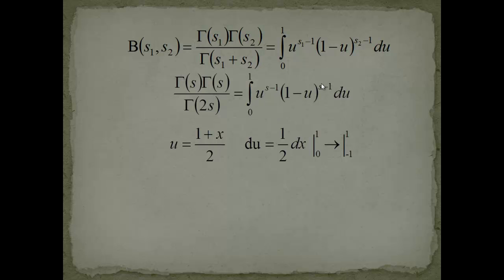If you look at it, we have u and u minus 1, and this is symmetric around 1/2. If you take 1/2 plus x/2 or 1/2 minus x/2, you should end up having the same value — these are symmetric around 1/2. So we use the substitution u equals (1 + x)/2, giving us du equal to 1/2 dx.